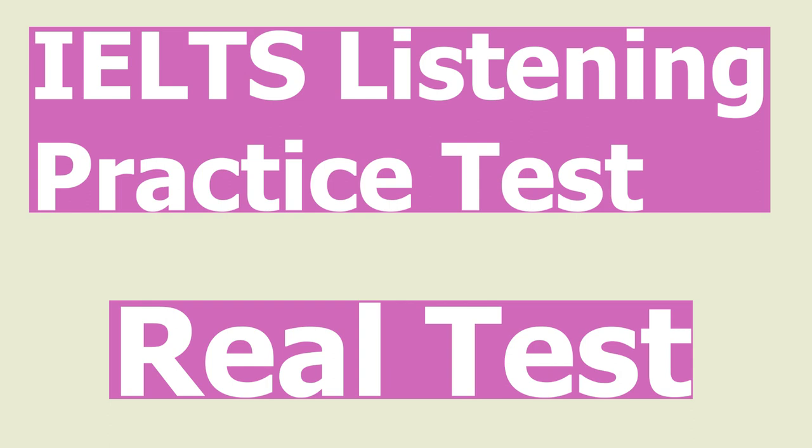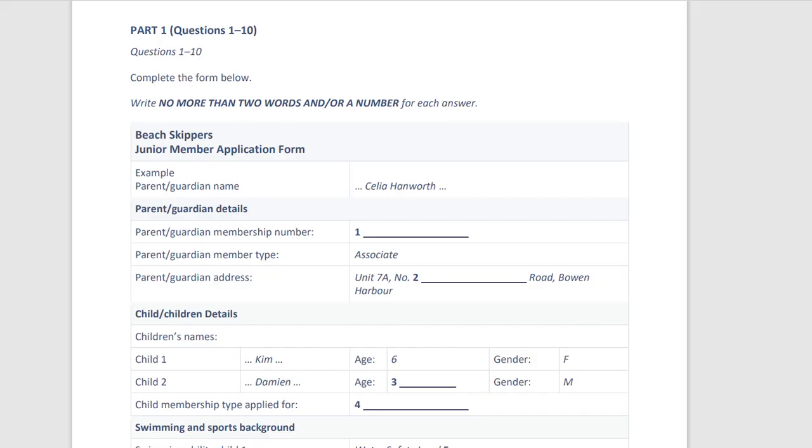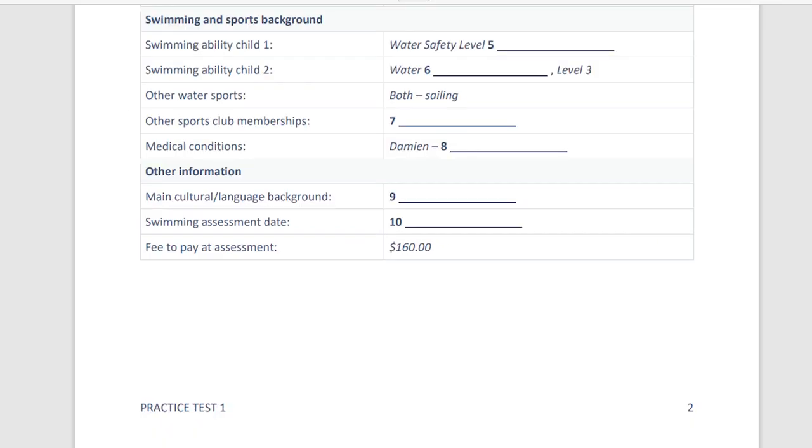Practice Test 1. IELTS Practice Listening Test. You will hear four different recordings and you will have to answer questions on what you hear. You will have time to read the instructions and questions and you have time to check your work. All the recordings will be played once only.